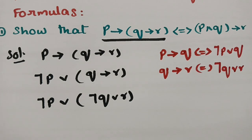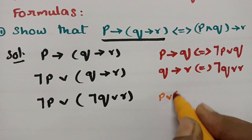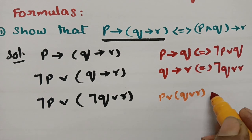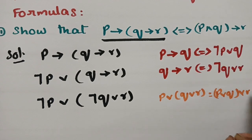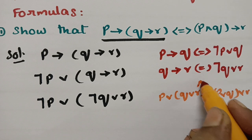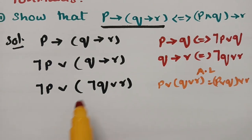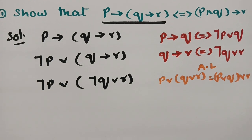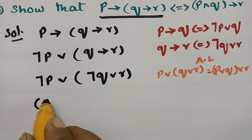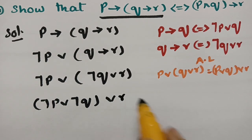Now I am going to use the associative law. The associative law states that P or (Q or R) can be written as (P or Q) or R. As all symbols are 'or', I can shift the brackets to the first two terms. So this value becomes (negation P or negation Q) or R.